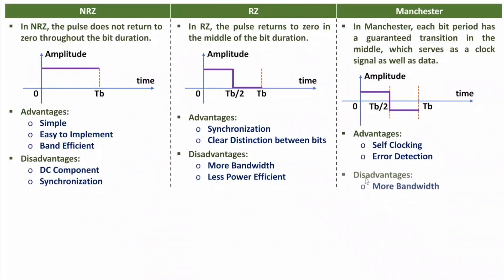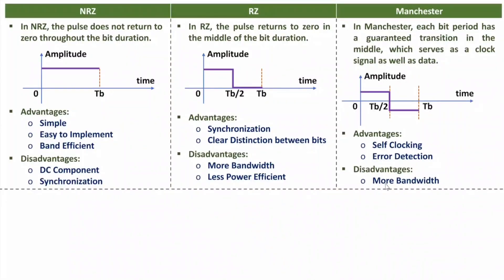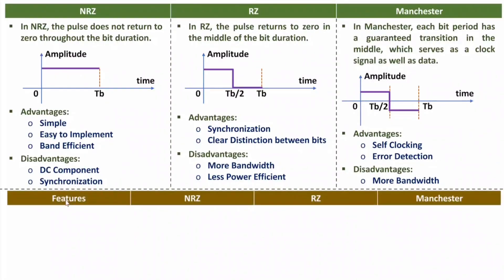The disadvantage of Manchester is that it requires more bandwidth. Manchester and RZ both require equal bandwidth. In terms of bandwidth efficiency, NRZ is best, but NRZ has issues with DC component and synchronization.